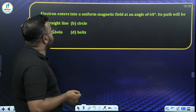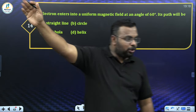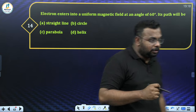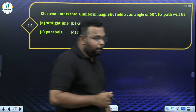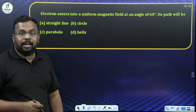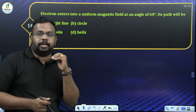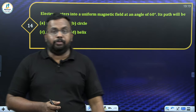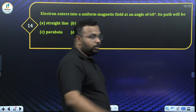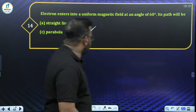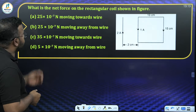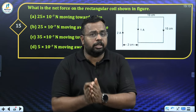Question 14: An electron enters a uniform magnetic field at an angle of 60°. Its path will be — ? If θ = 0° or 180°, it moves straight; if θ = 90°, circular path; between 0° and 90° it follows a helical path. At 60°, the answer is helical path.